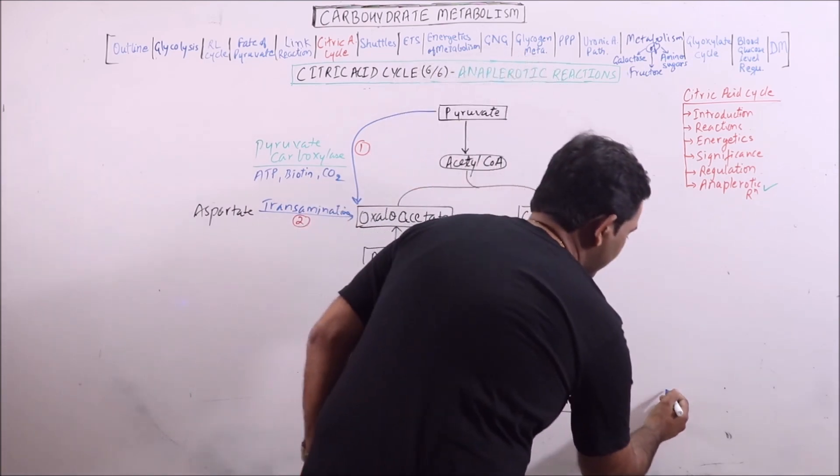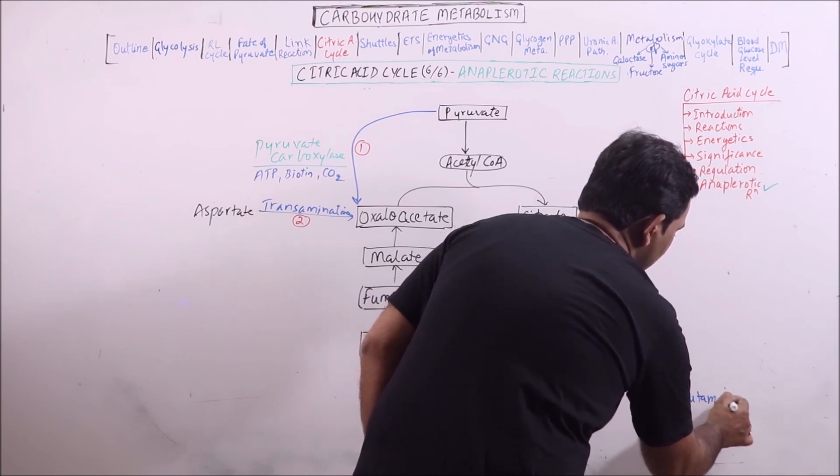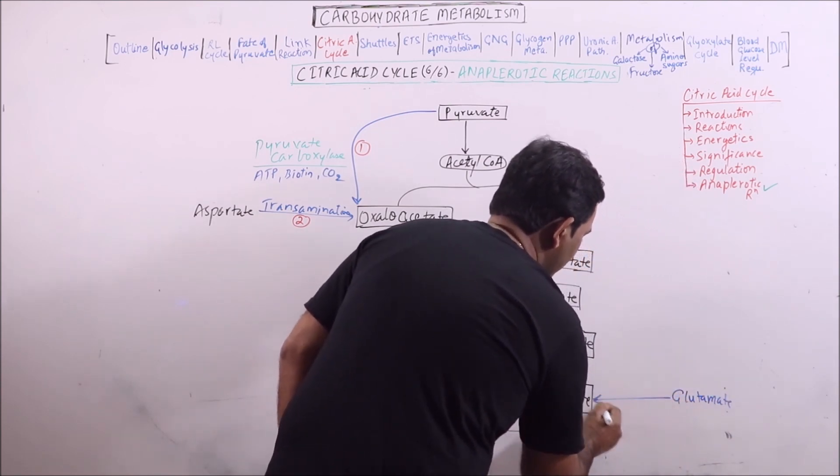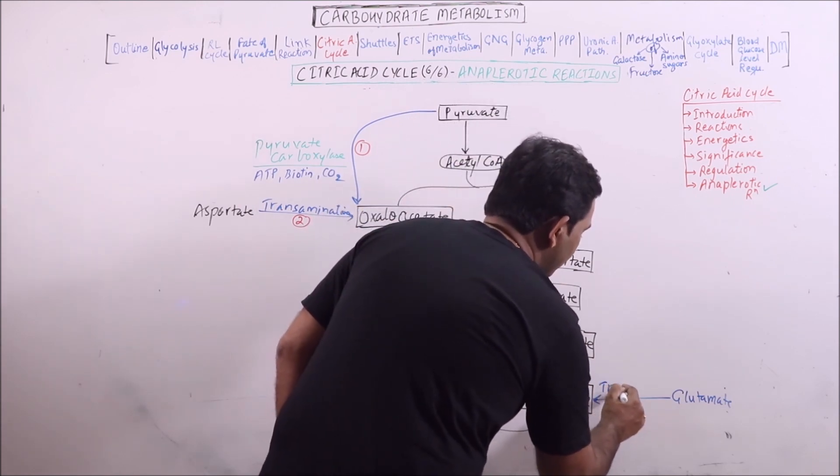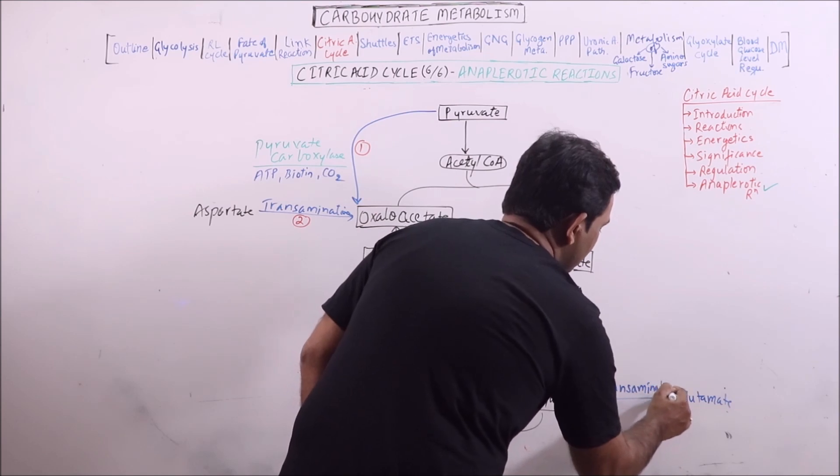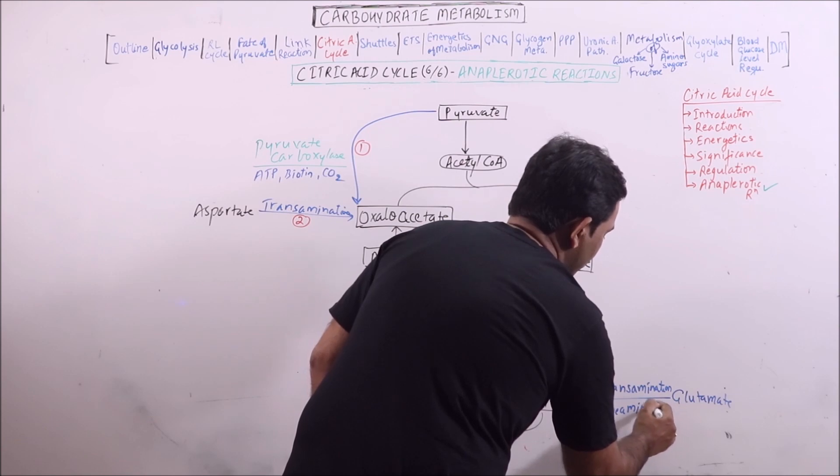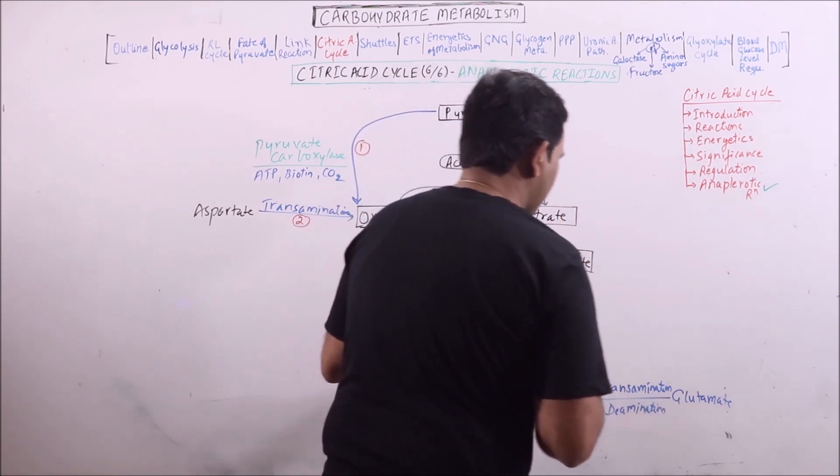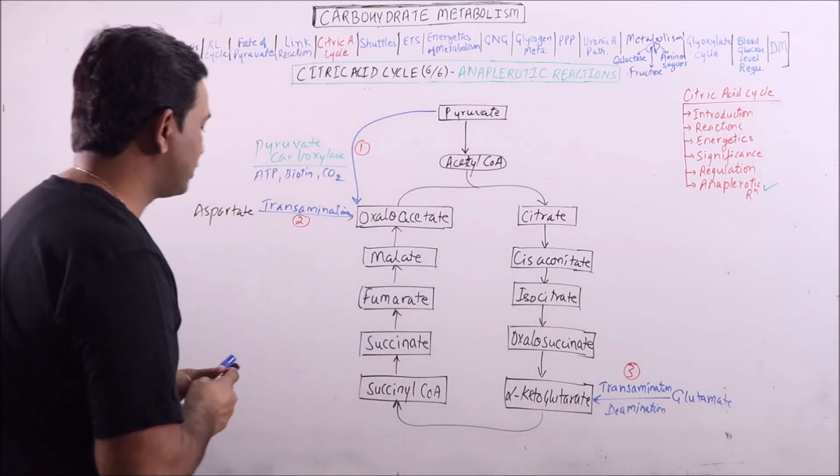Now alpha-ketoglutarate, glutamate can also be converted to alpha-ketoglutarate by transamination or deamination. This is the third step which results in anaplerosis.